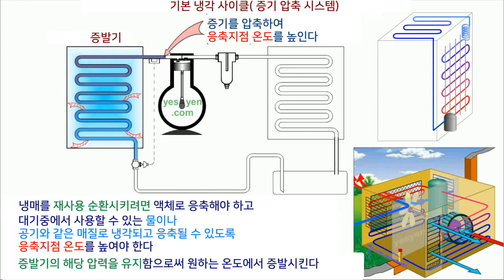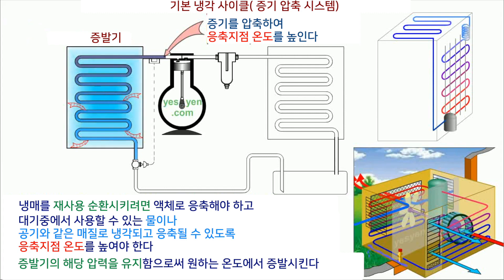To reuse the refrigerant, it has to be condensed to liquid state. For this, the condensing — that is, the boiling point temperature — has to be increased so that it can be cooled and condensed by a medium like water or air available at atmospheric temperature. Hence the vapor is compressed in a compressor to increase the pressure and the corresponding condensing, that is boiling point temperature.